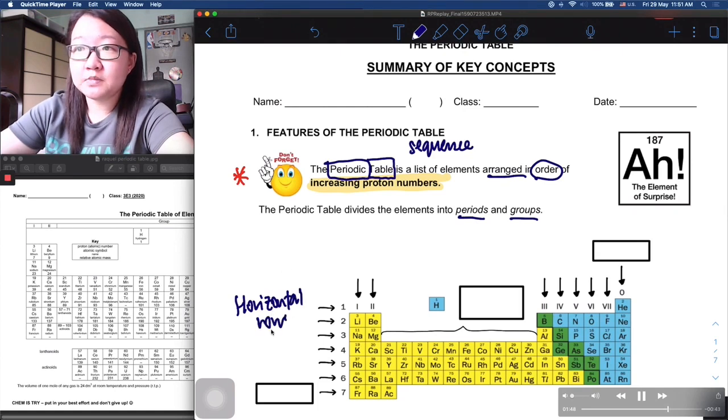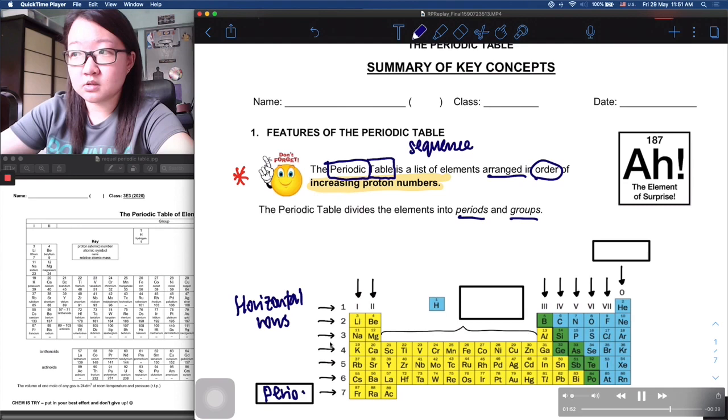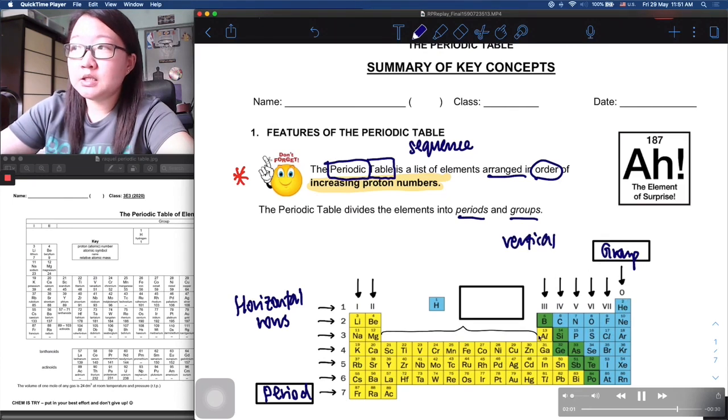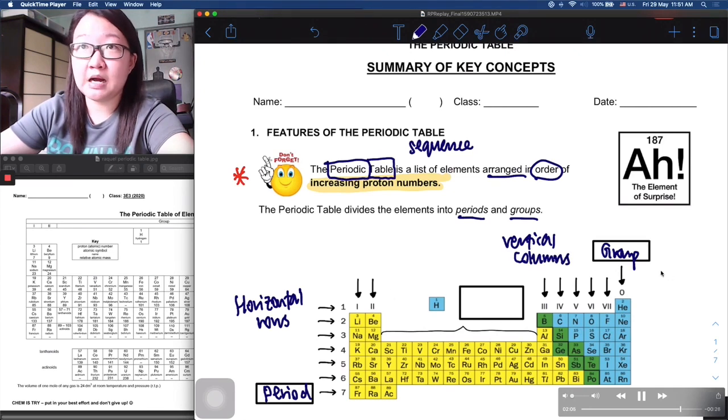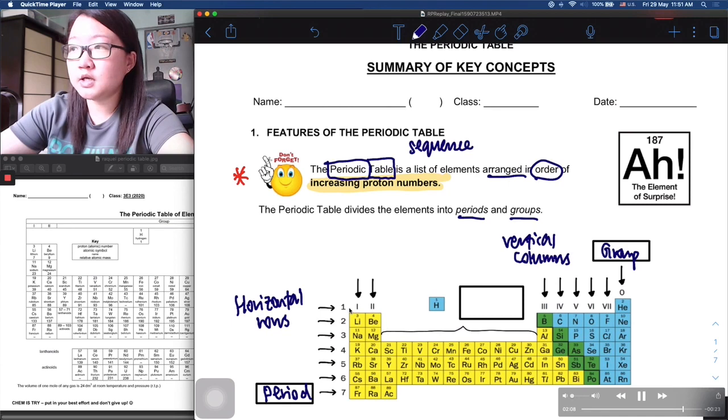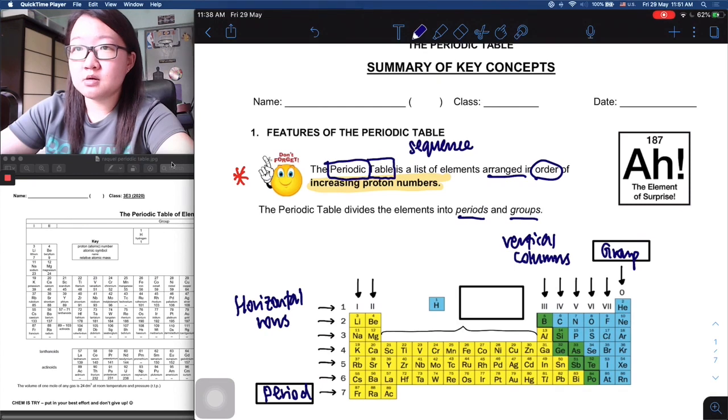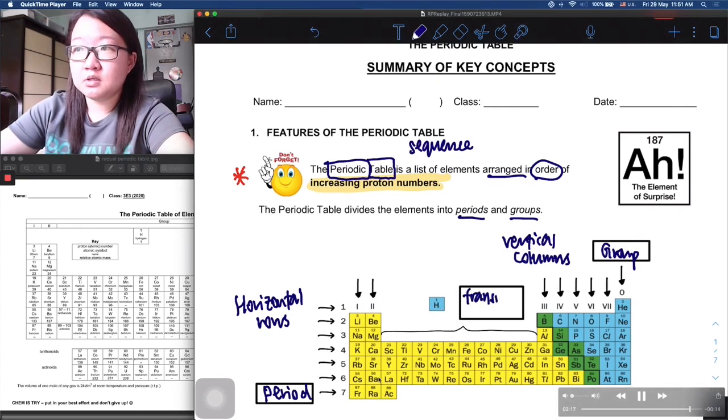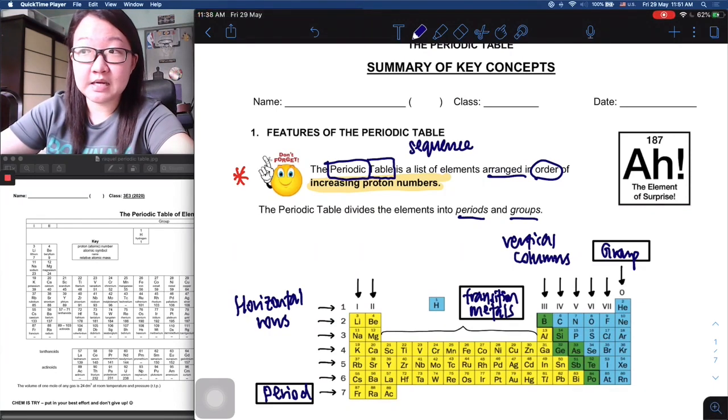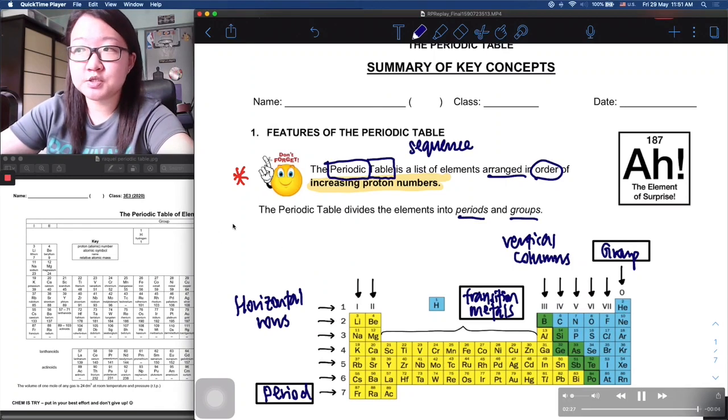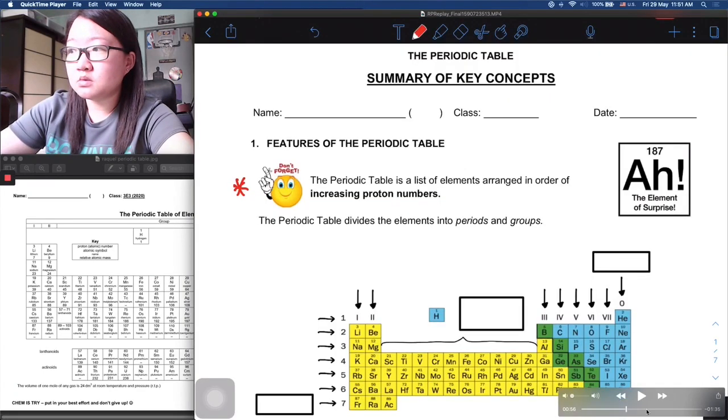This you should be quite familiar with. The horizontal rows that you see across are periods - period 1 or period 7. And then those that are vertical columns indicated by these arrows, these are groups. Remember, group number is always in Roman numerals.